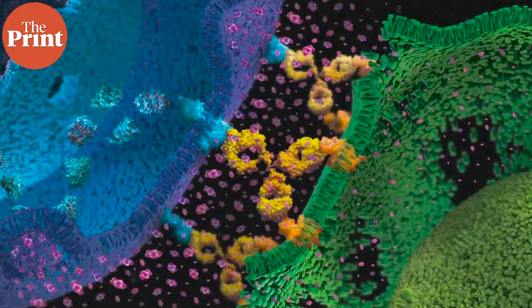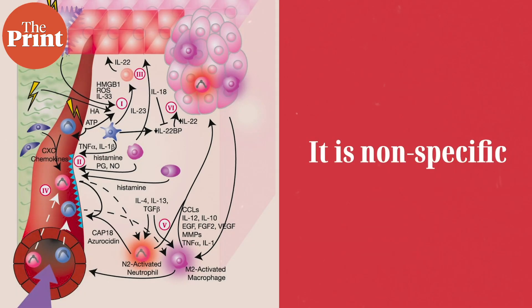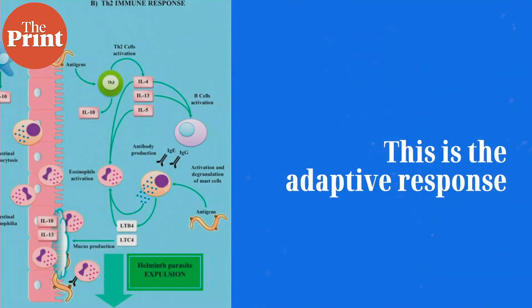We've discussed in previous videos the innate and adaptive immune responses and the role of cytokines. Our bodies, when faced with a pathogen, have two kinds of sequential immune responses. The innate immune response is immediate and fires as soon as a pathogen is detected. It is non-specific, but it gives the body enough time to prepare a second wave of more personalized, specific attack on the pathogen.